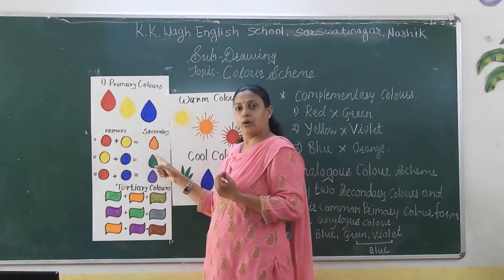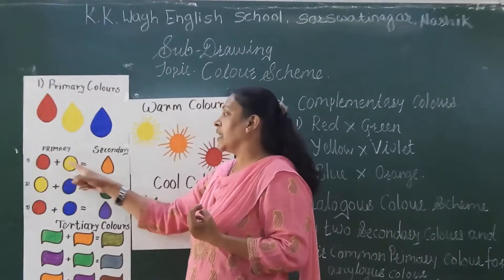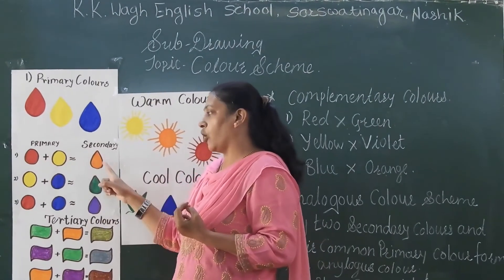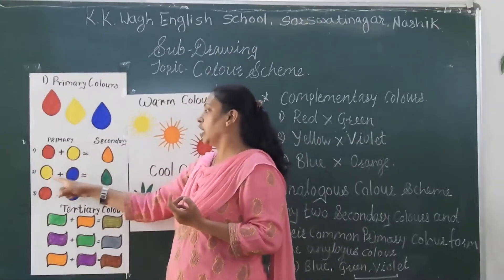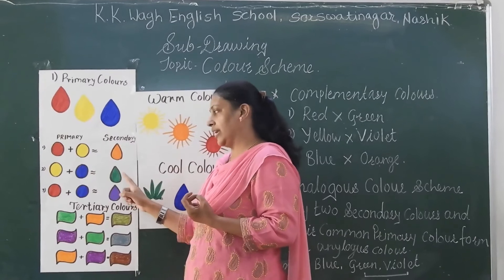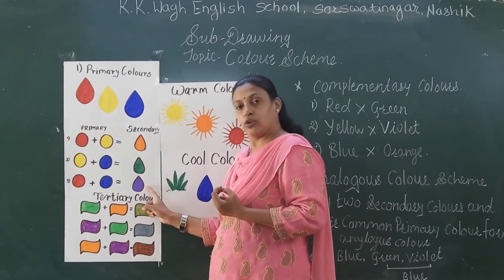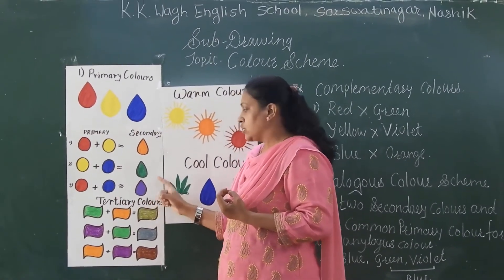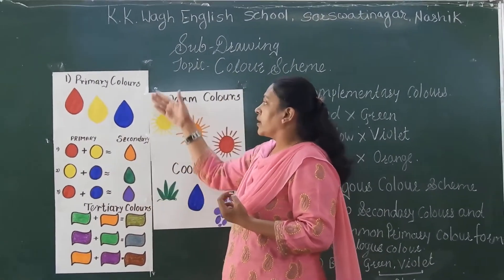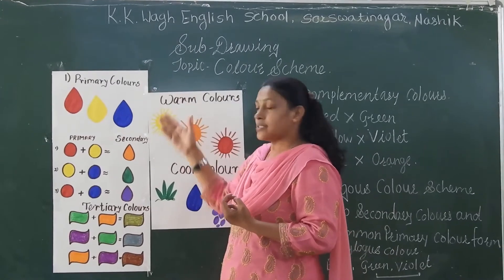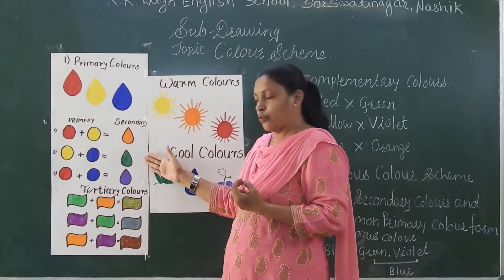We have many secondary color combinations: red plus yellow gives orange; yellow plus blue gives green; red plus blue gives violet. So these are our primary colors and secondary colors.